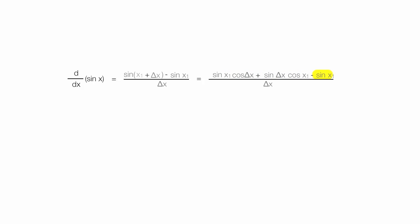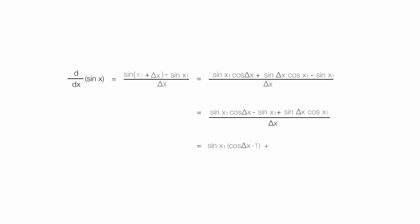I want to combine like terms and move them closer together, taking the two sine x1 terms together. So this becomes: sine of x1 times cosine delta x, minus sine x1, all this plus sine of delta x times cosine x1, divided by delta x. I'm going to factor out sine x1, giving sine x1 times the quantity cosine delta x minus 1, plus the right-hand side term, all divided by delta x.